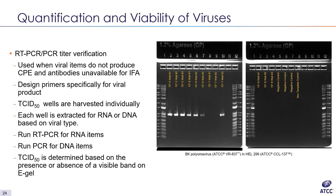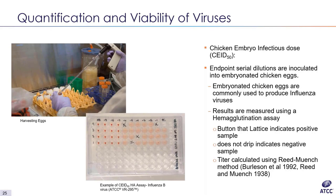Another type of endpoint dilution assay is the CEID50 — chicken embryo infectious dose — a useful tool for identifying viral titer using embryonated chicken eggs. Eggs must be 9 to 11 days old depending on the virus for inoculation. Before any work can be performed, eggs must be candled, identifying and marking the air sac and embryo's eye. Once ready, a serial dilution of virus is inoculated into the eggs, and after incubation, allantoic fluid is harvested from each egg and stored individually. Influenza is commonly tested in this way.